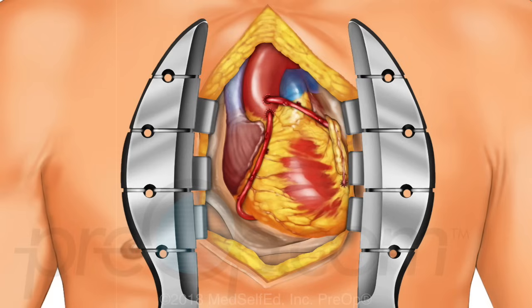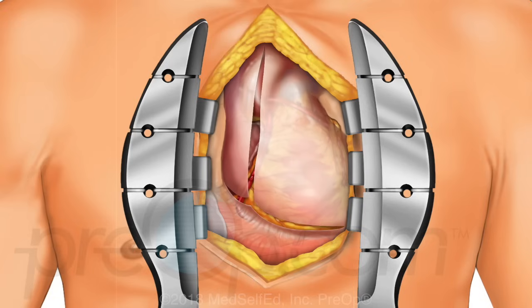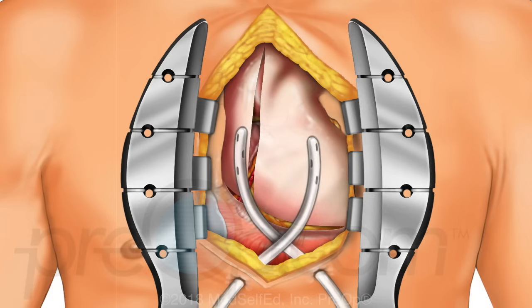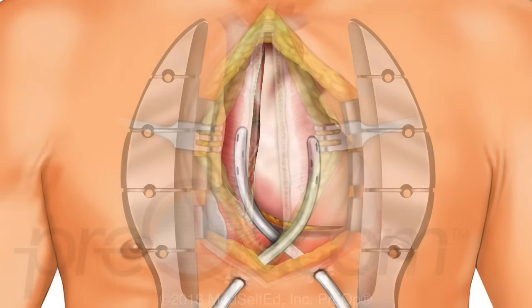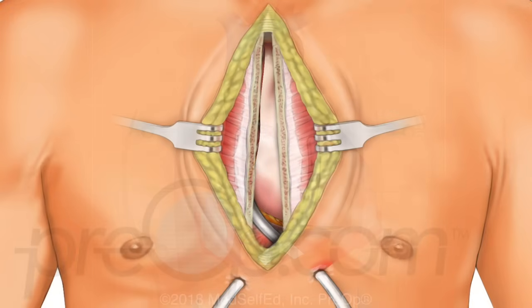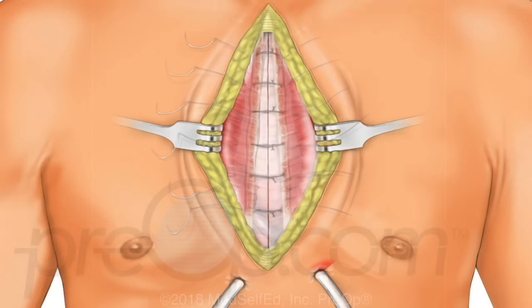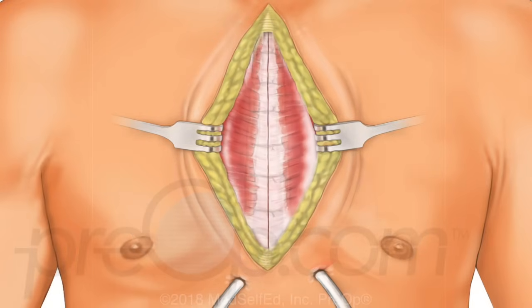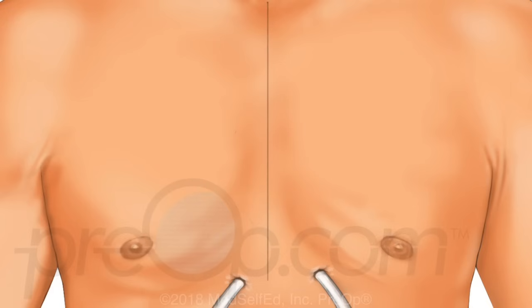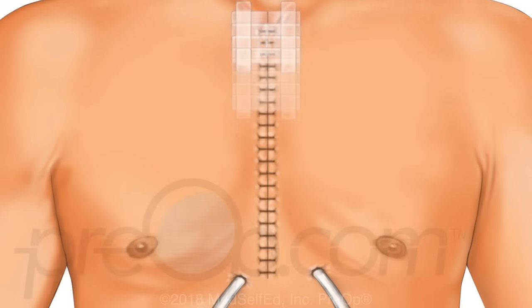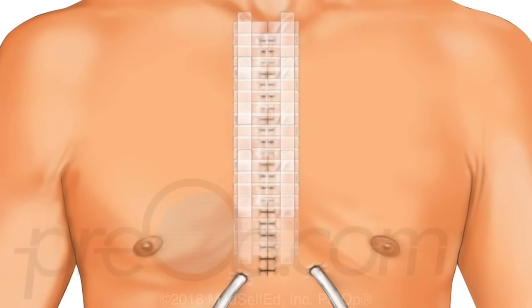Blood flow through the grafts is checked. The pericardium is positioned back over the heart. Flexible drains are placed. The sternum is closed and supported with wire or small plates and screws. The remaining tissue layers are brought together, the skin is closed, and a dressing is placed.